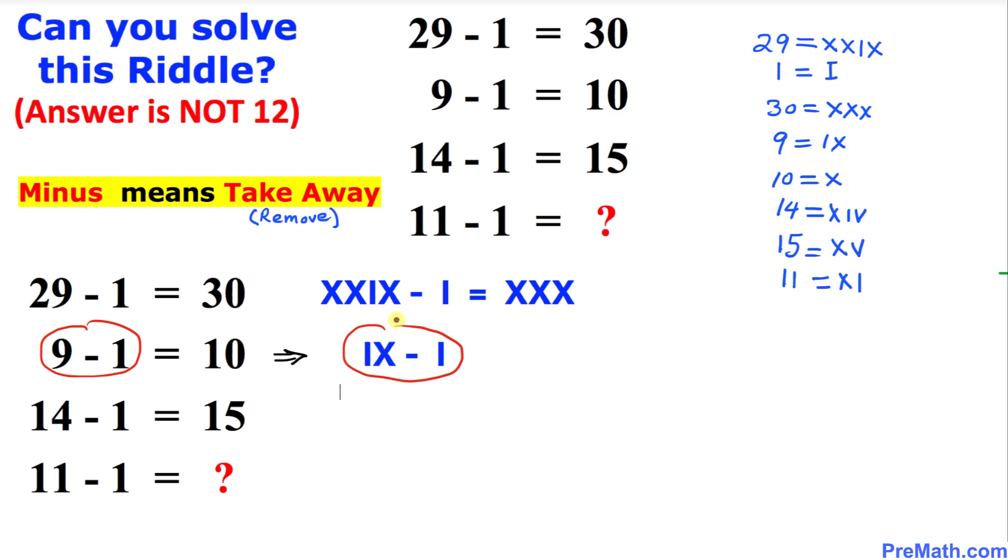So once we remove this I, we are left with X, isn't it? And no wonder I put down 10 right here. And in the next equation, 14 minus 1 has been converted into Roman numerals.